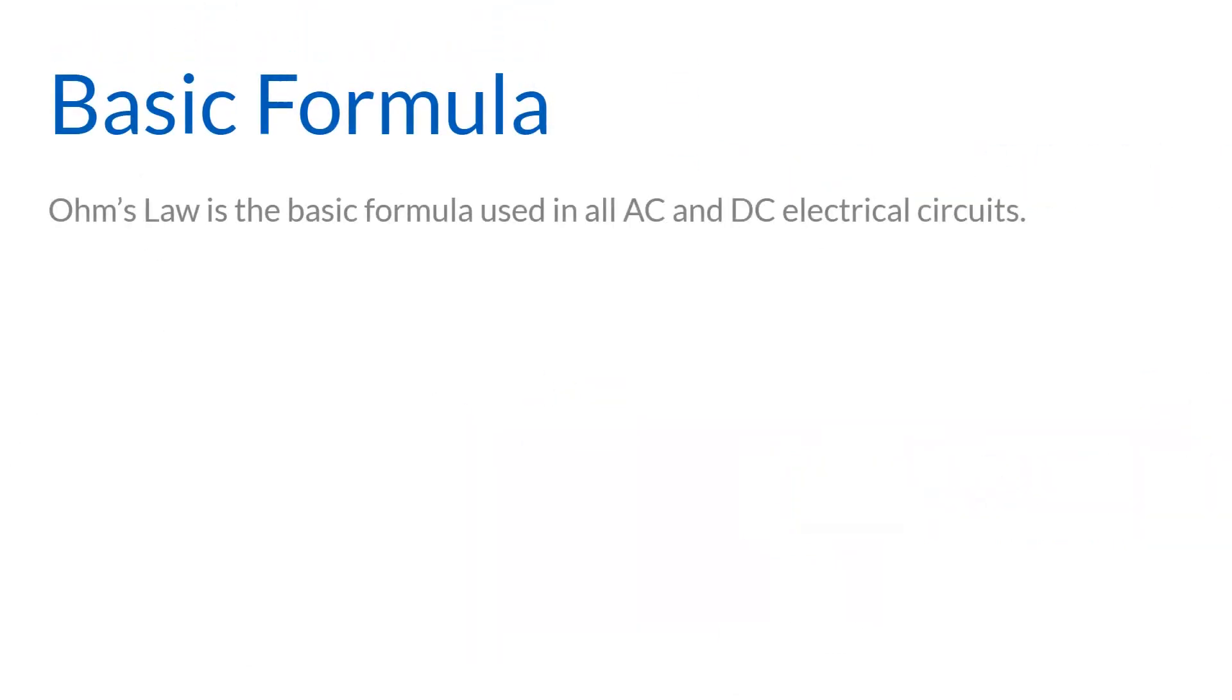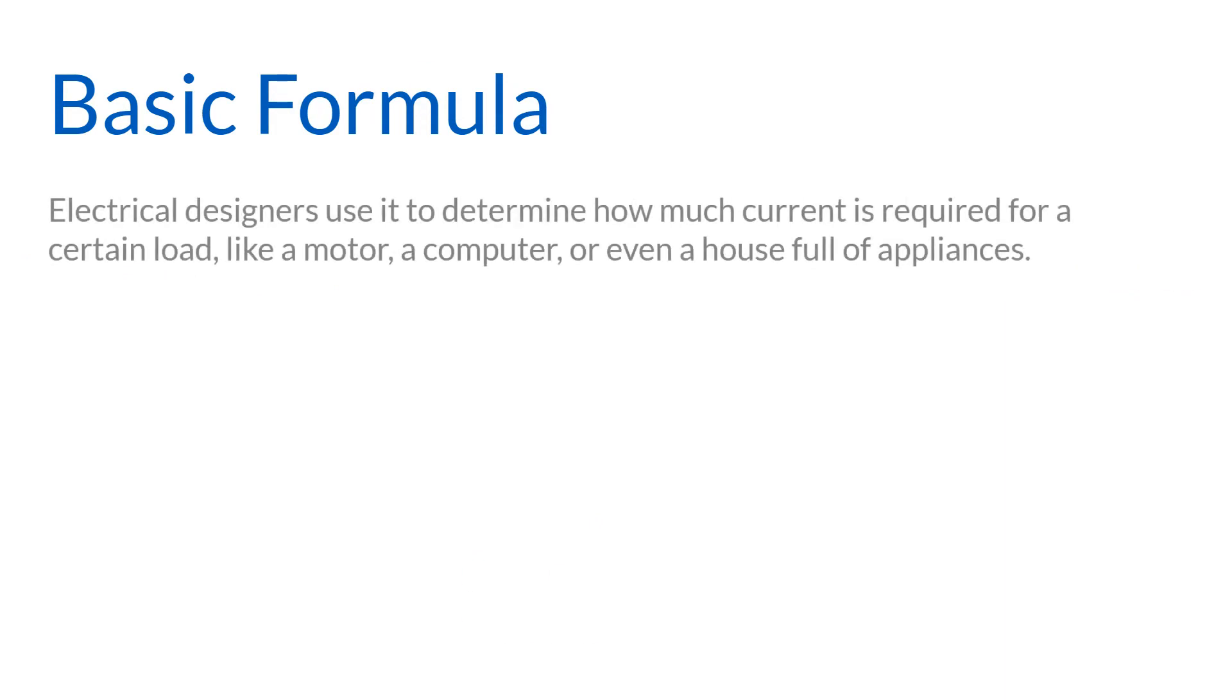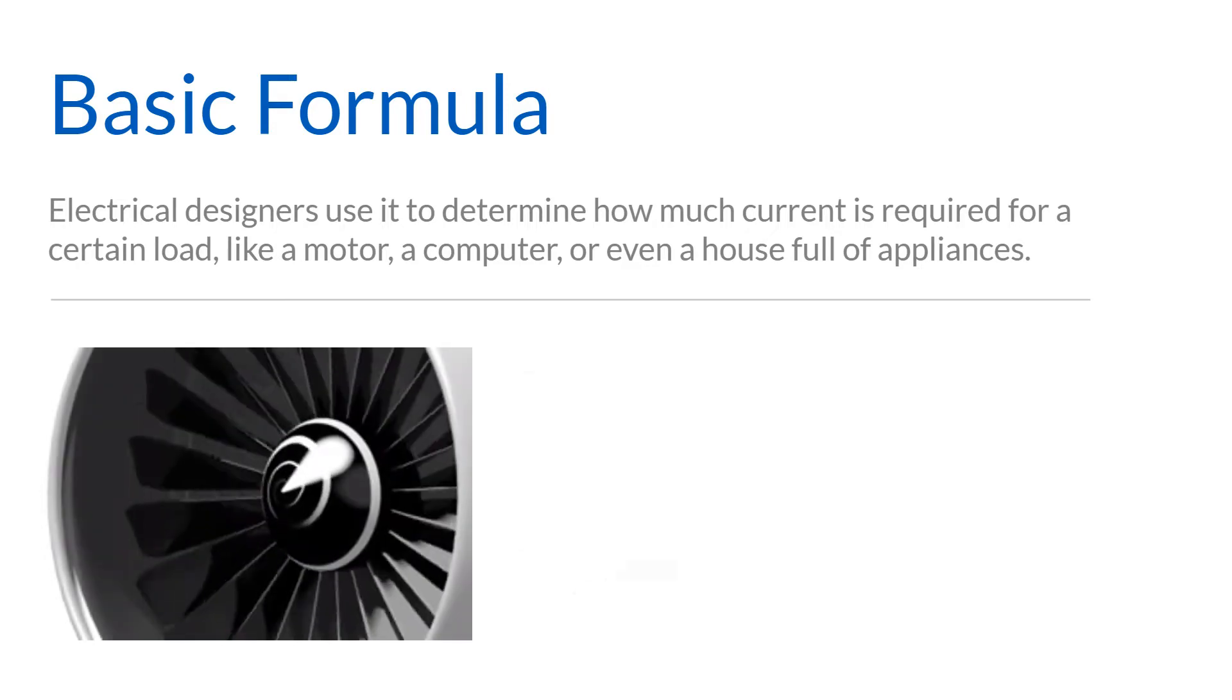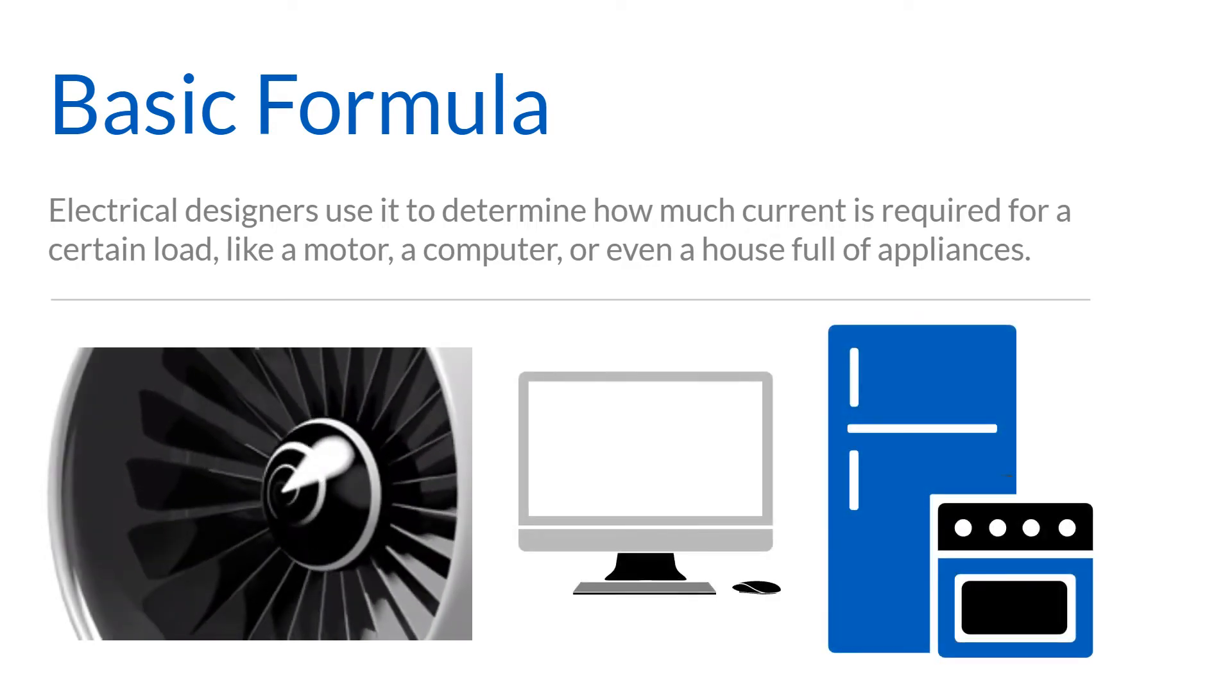Ohm's Law is the basic formula used in all AC and DC electrical circuits. So if you know two of the three characteristics, you can calculate the third one. Electrical designers use it to determine how much current is required for a certain load, like a motor, a computer, or even a house full of appliances.